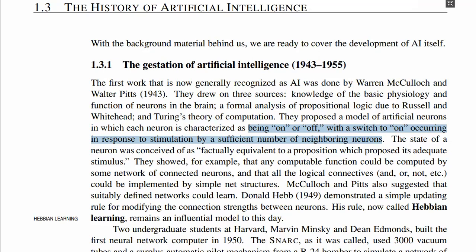These states are on or off. The neuron achieves this state when it receives input from the neighboring neurons. We have already discussed that one neuron is connected with many other neurons through connections known as dendrites. When a neuron receives stimulus or response from the neighboring neurons, based on that, it could be in a state which can be on or off. They also proposed that we can compute any function by a network of neurons using logical connectives and logical operations, which could be implemented by simple network structures.